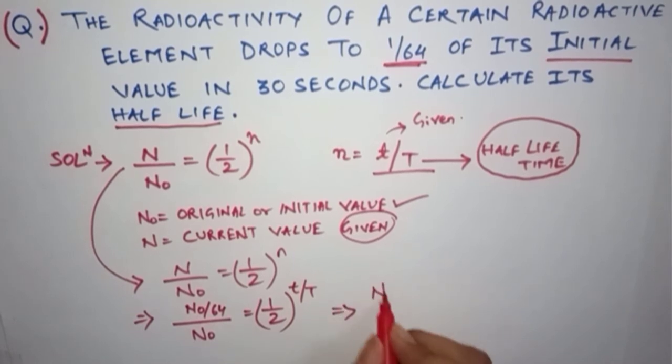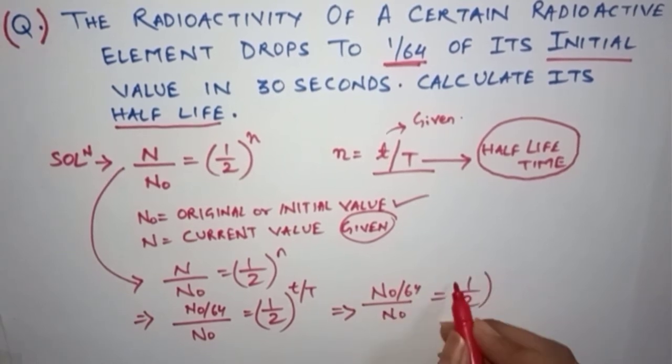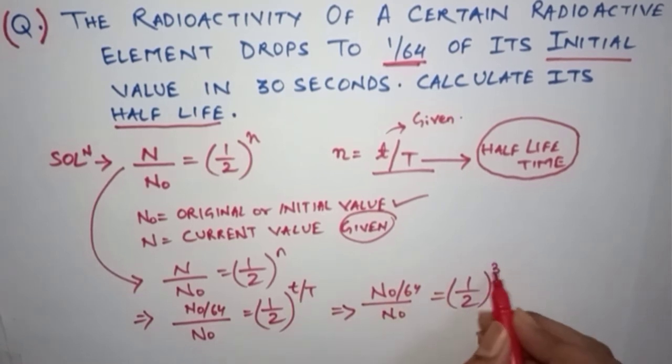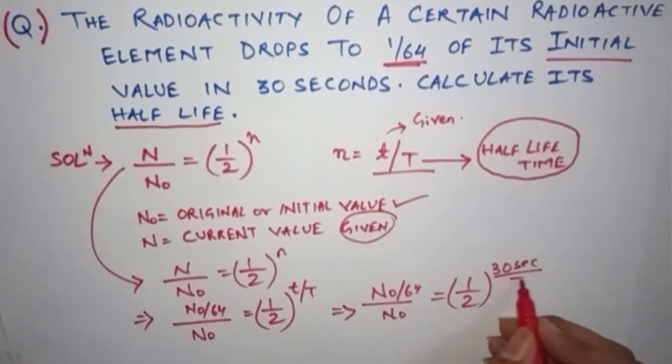So N₀/64 divided by N₀ is equal to (1/2) to the power of small t by capital T. So here the small t will be 30 seconds - yes, it is given in the question - divided by the capital T which we need to find.